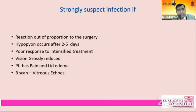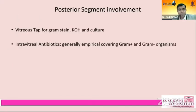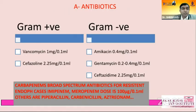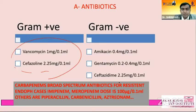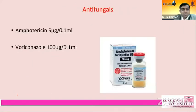Complications include endophthalmitis, intraocular inflammation, raised IOP, and persistent floaters. If suspecting endophthalmitis, remember the A, B, C, D, E rule: A is for antibiotics, B is for betadine wash, C is for reconstitution, D is for dosage, distance, direction, and decompression, E is for visual acuity. For antibiotics: gram-positive — vancomycin and cefazolin; gram-negative — amikacin, gentamicin, and cefazolin. Antifungals: voriconazole 100 microgram in 0.1 ml is preferred.